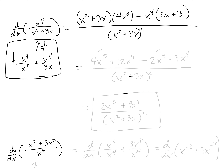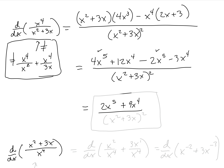We can simplify by distributing 4x^3: 4x^3 · x^2 = 4x^5, plus 12x^4, minus x^4 · 2x = 2x^5, minus 3x^4, all divided by (x^2 + 3x)^2. Combining like terms: 4x^5 − 2x^5 = 2x^5, and 12x^4 − 3x^4 = 9x^4. So the derivative is (2x^5 + 9x^4)/(x^2 + 3x)^2.